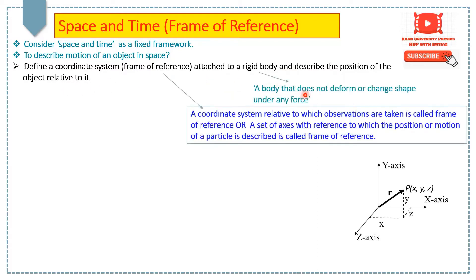A rigid body is a body that does not deform or change shape under any force, and frame of reference means a system relative to which observations are taken. You can define a set of axes with reference to which position or motion of a particle is described.